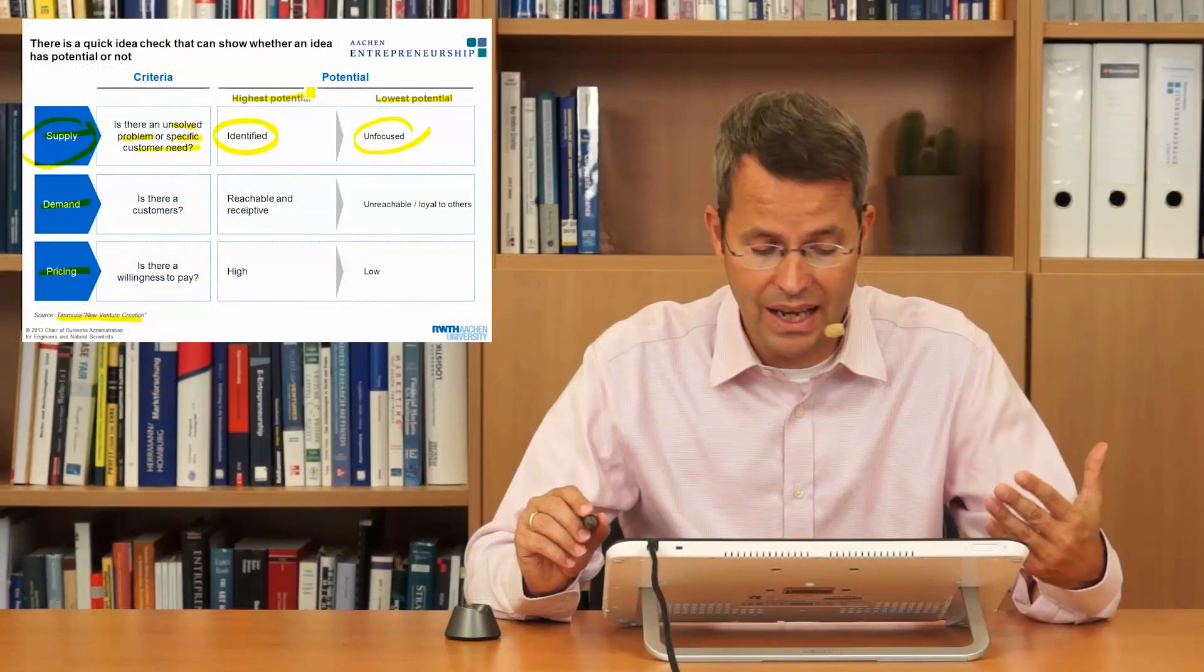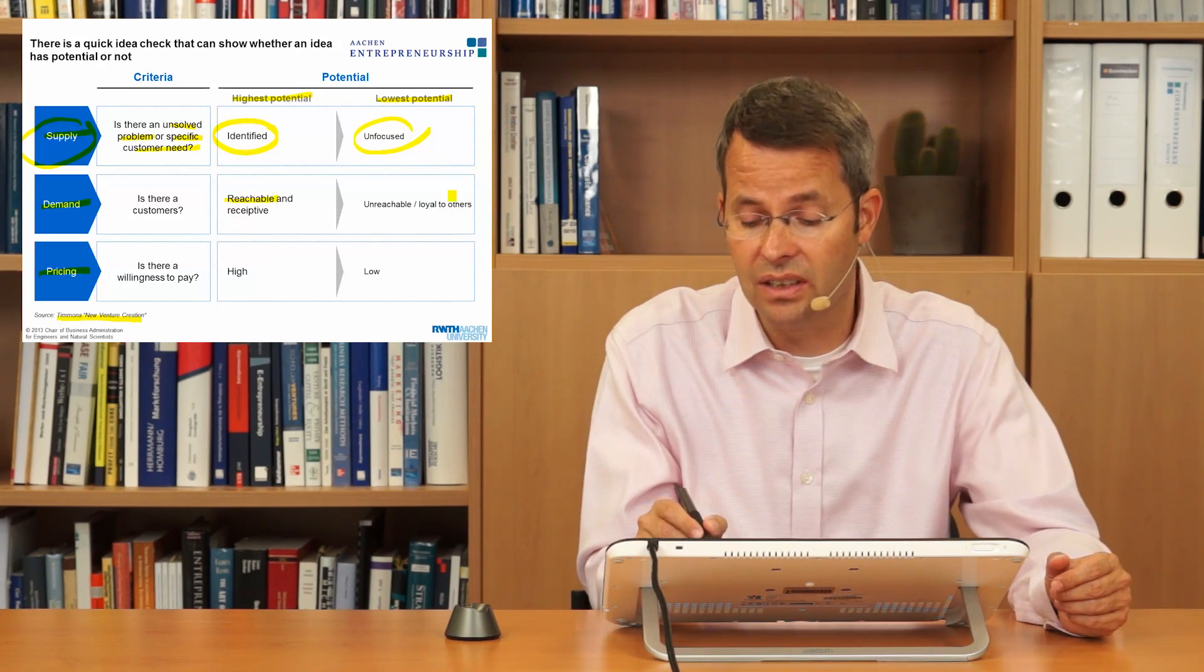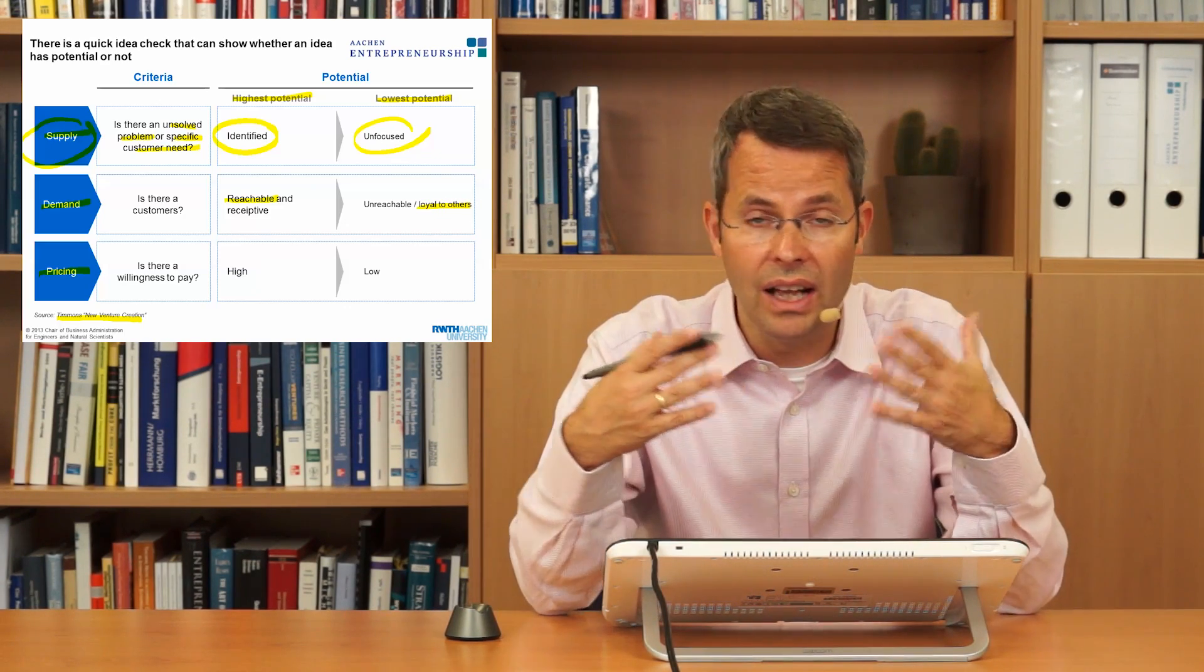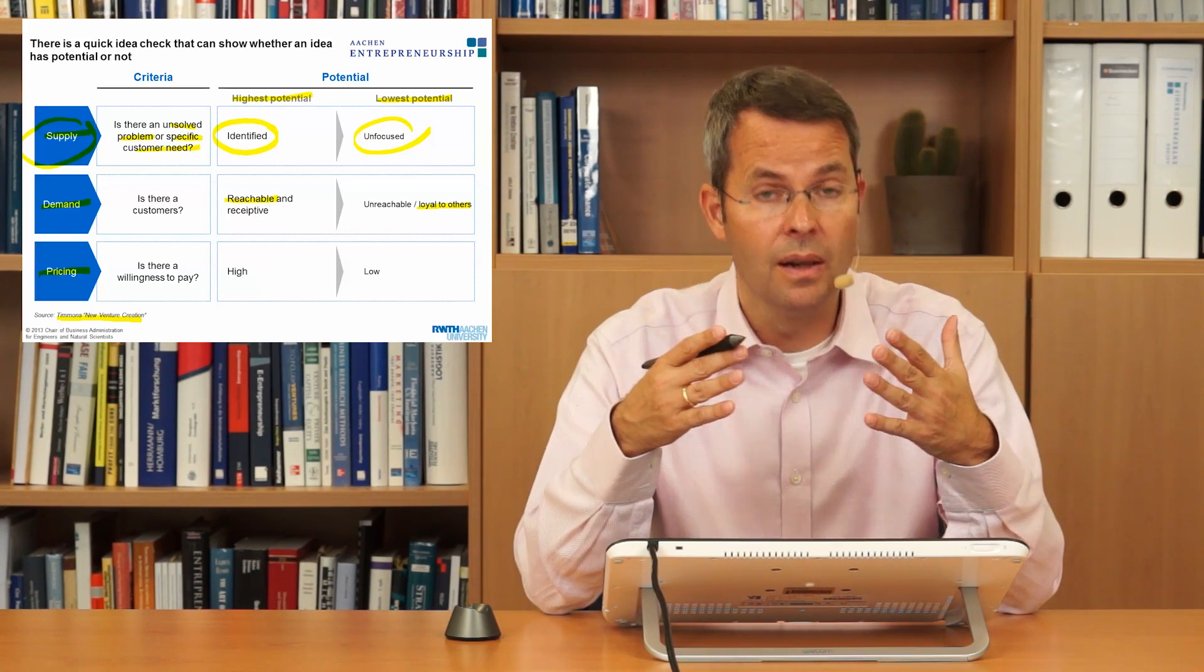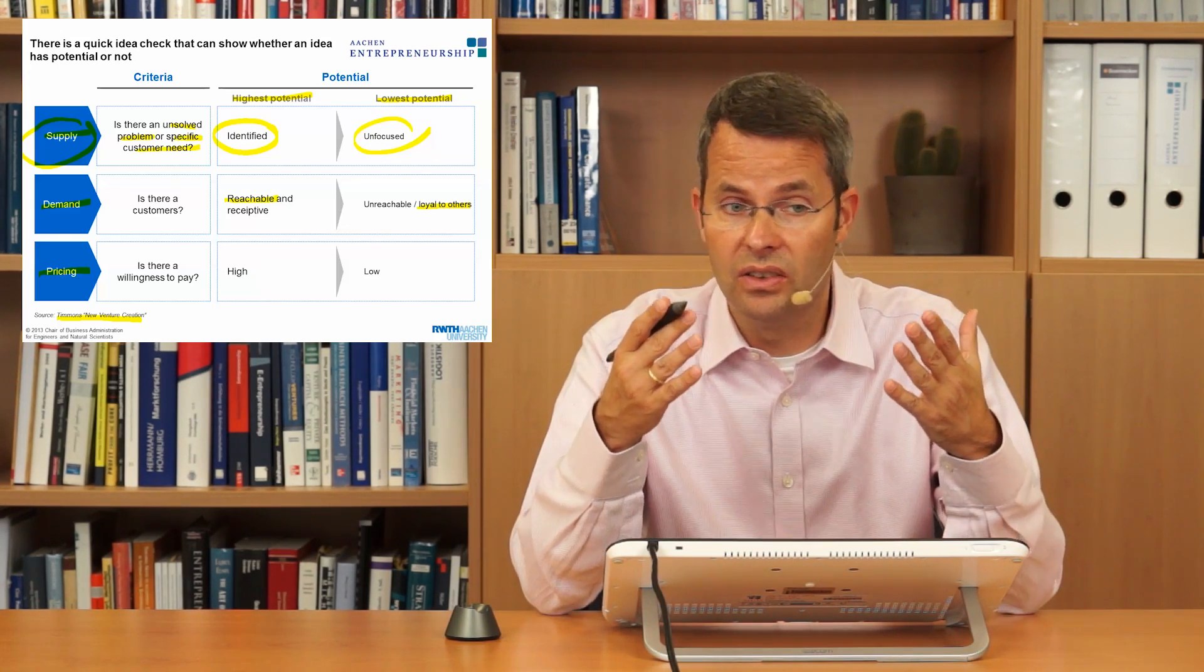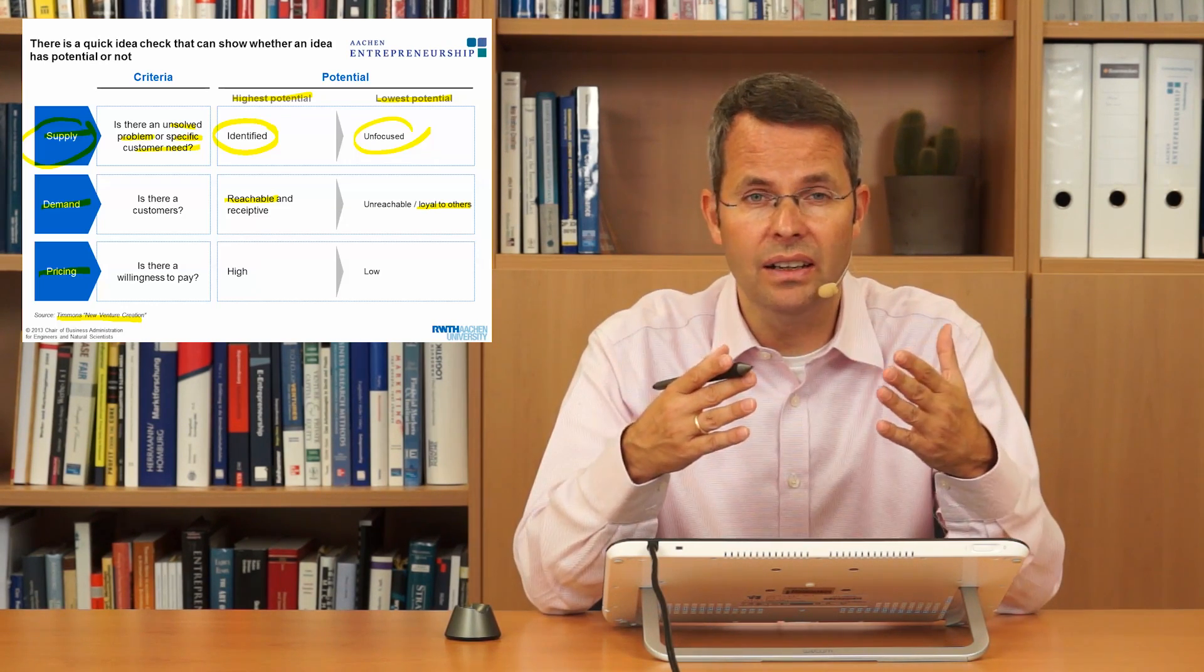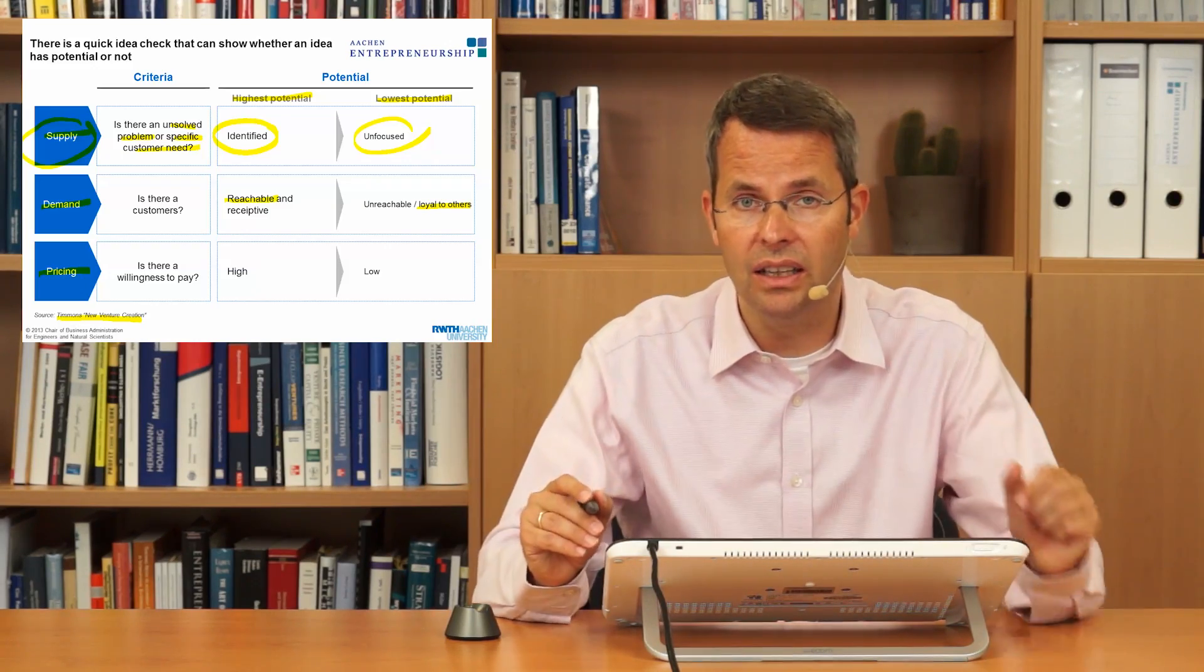Is there a demand by the customer? So can you reach the customer or is the customer loyal to others? So maybe there are already solutions for helmets out there and you can never get into this market. Or maybe universities, there are universities that are so cool that people always want to go there and don't care about online education. Maybe there is no demand for online education then.